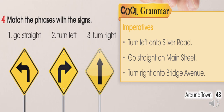Activity number four. Match the phrases with the signs. Vamos a continuar con la actividad número cuatro. Vamos a relacionar las frases con las señales. Tenemos number one: Go straight. Number two: Turn left. And number three: Turn right.